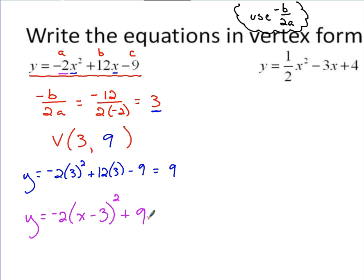Why would it be minus 3? Always the opposite of what we have here, right? Just like if I have the vertex form here, and I'm trying to figure out what the vertex is, I take the opposite of that value, that becomes my x coordinate.